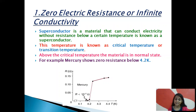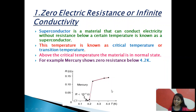We have already discussed that the critical temperature for mercury is 4.2 Kelvin. It is that temperature at which the mercury resistivity suddenly drops to zero. Below the critical temperature, the mercury behaves like a superconductor, and above the critical temperature, the mercury comes to its normal state.